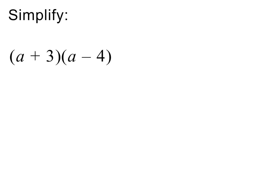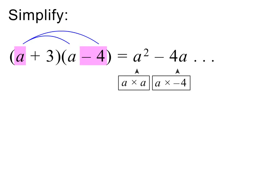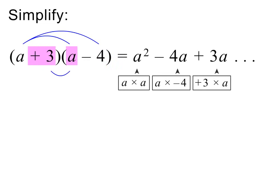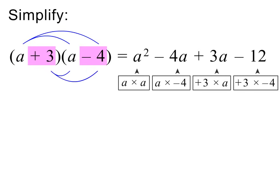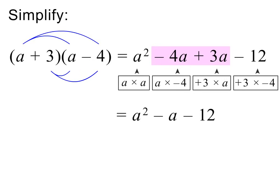Here is the next example. Let's again use FOIL to help us. We begin with the first terms: a times a equals a squared. Then the outer terms: a times minus 4 equals minus 4a. Then the inner terms: plus 3 times a equals plus 3a. Then the last terms: plus 3 times minus 4 equals minus 12. We again have like terms — minus 4a plus 3a equals minus 1a, or just minus a. Please pause to check my working.